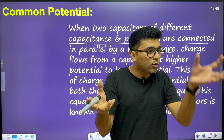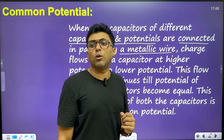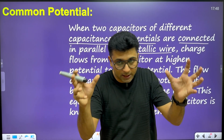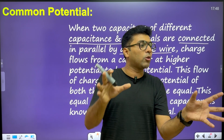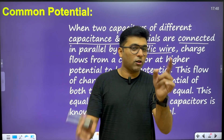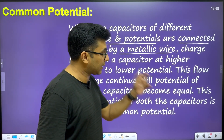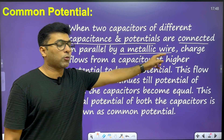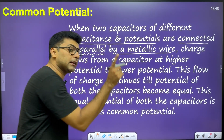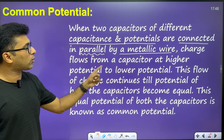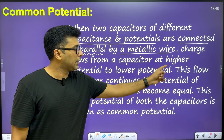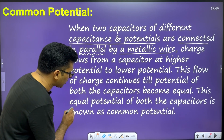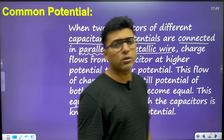When we connect the capacitors, the first capacitor has a certain potential and the second capacitor has a different potential. If we connect the capacitors, what happens? Charge flows from high potential to low potential. The flow continues until both reach the same value of potential. That same value is the common potential of both capacitors.